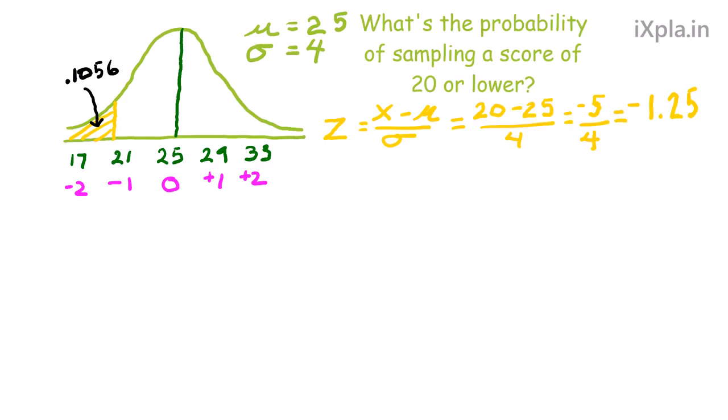All right, now we're going to change the question slightly. What's the probability of sampling a sample mean of 20 or lower? Well, it depends on the sample size, right? So the first thing we have to do is decide on a sample size.